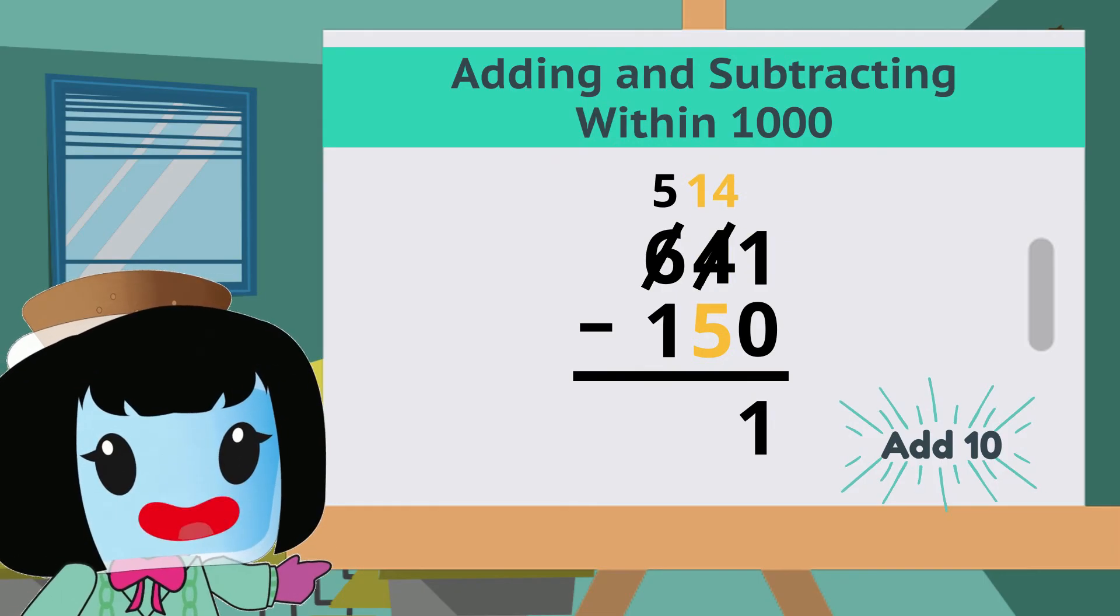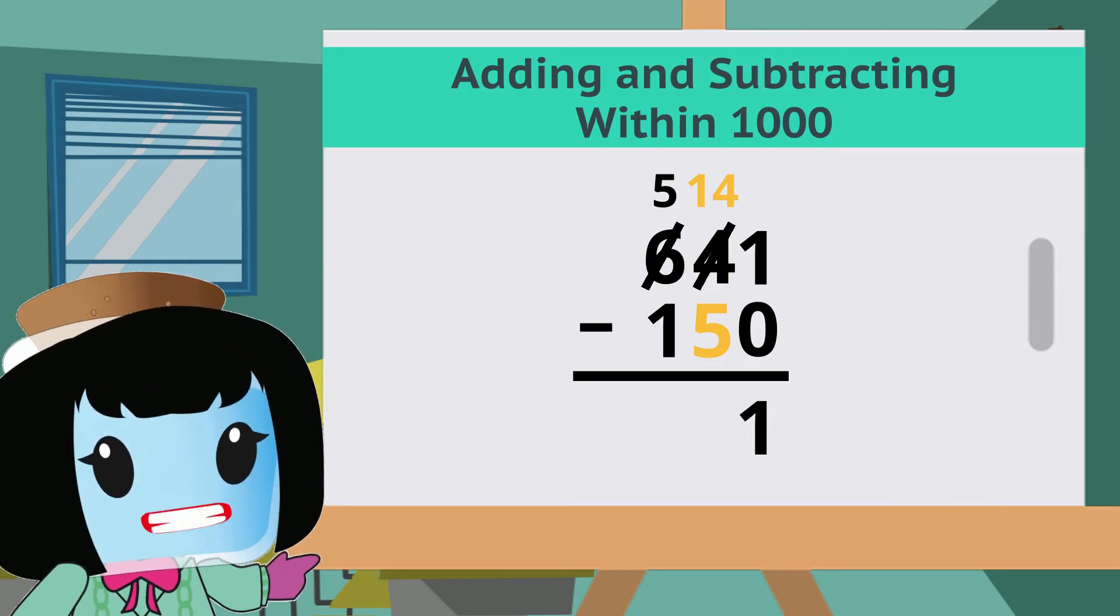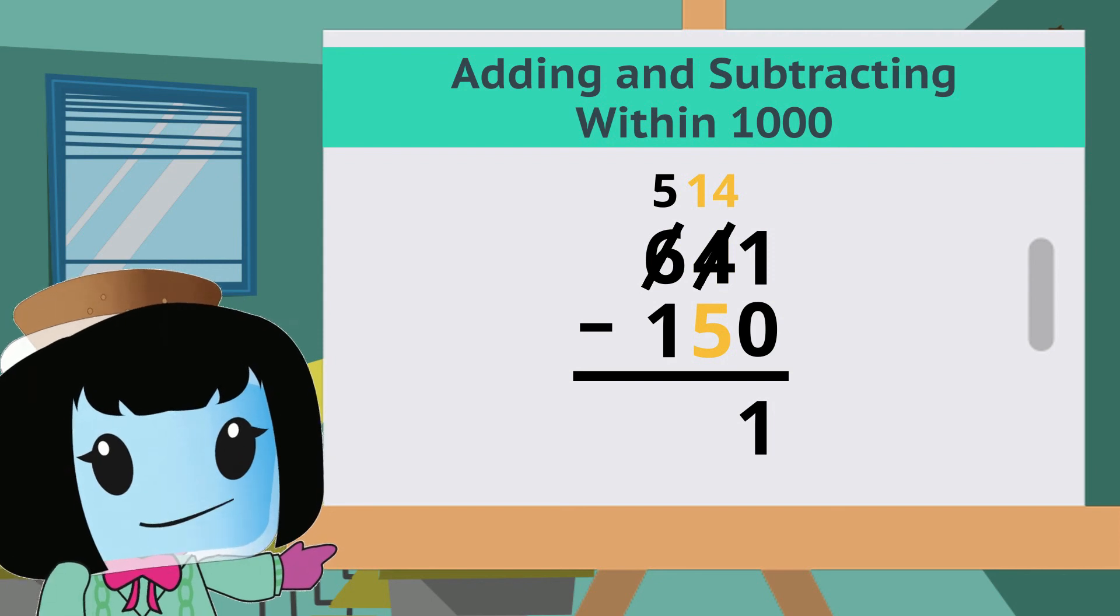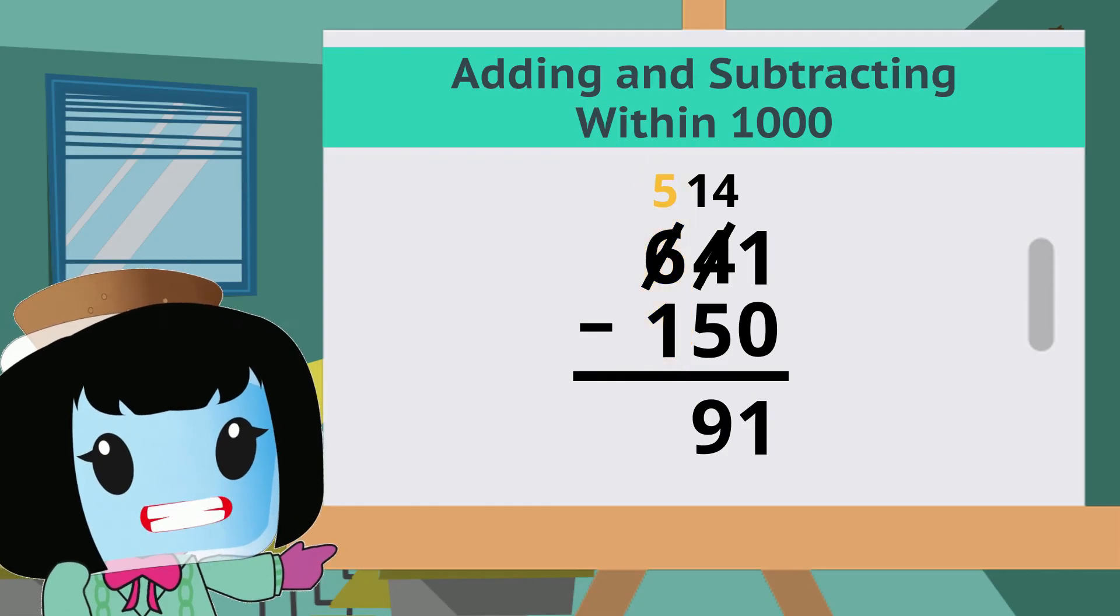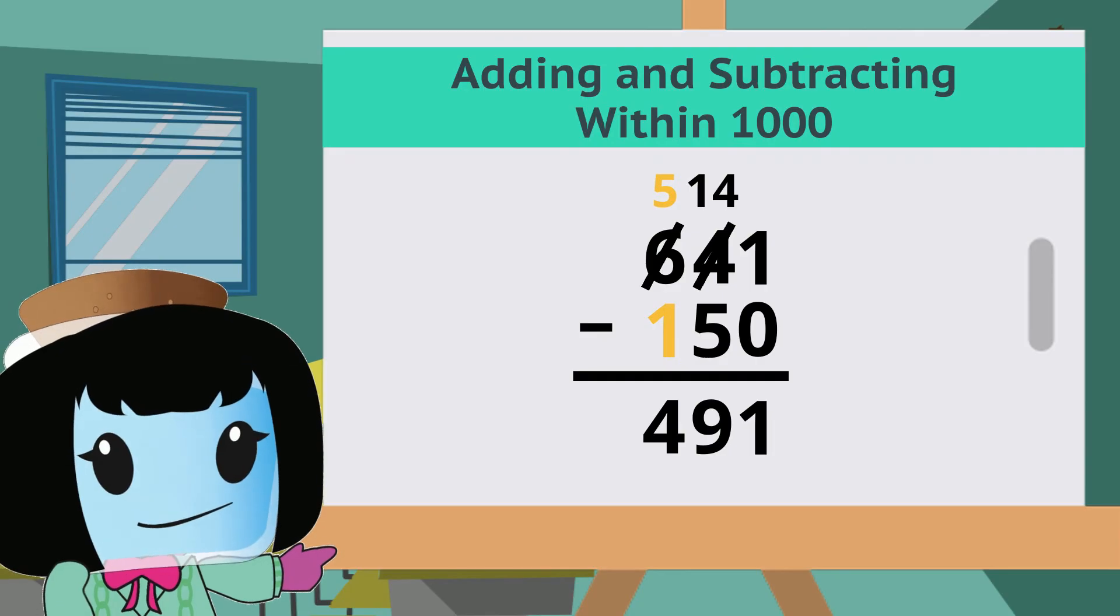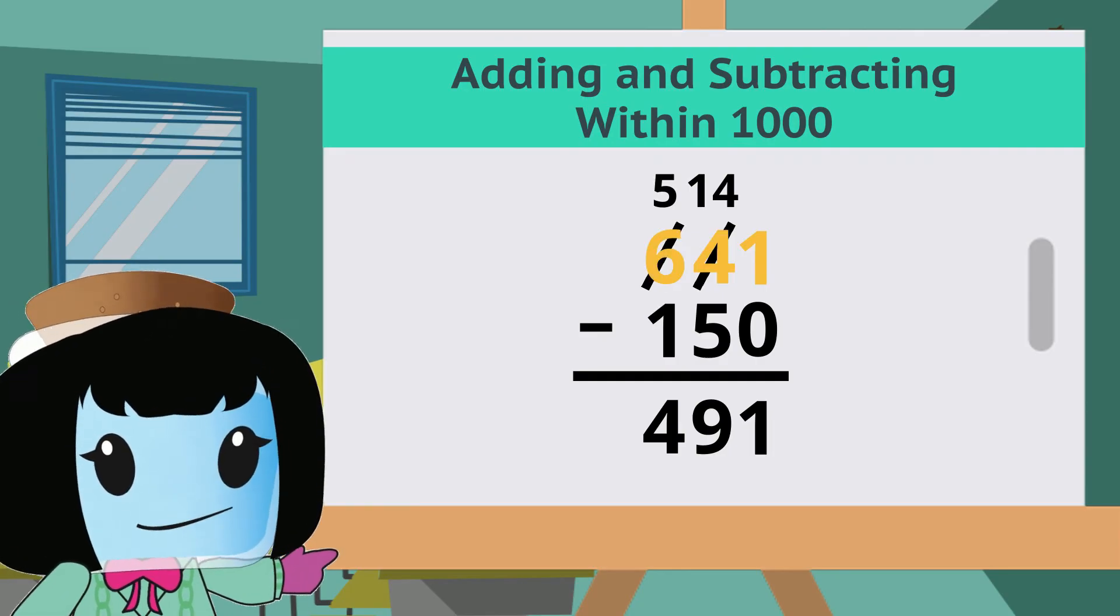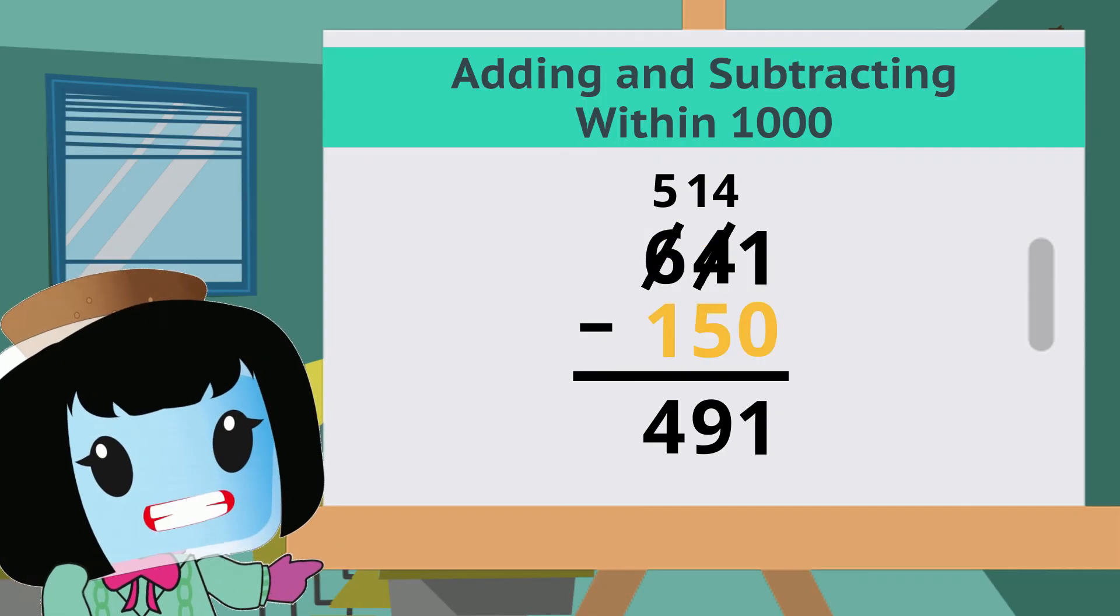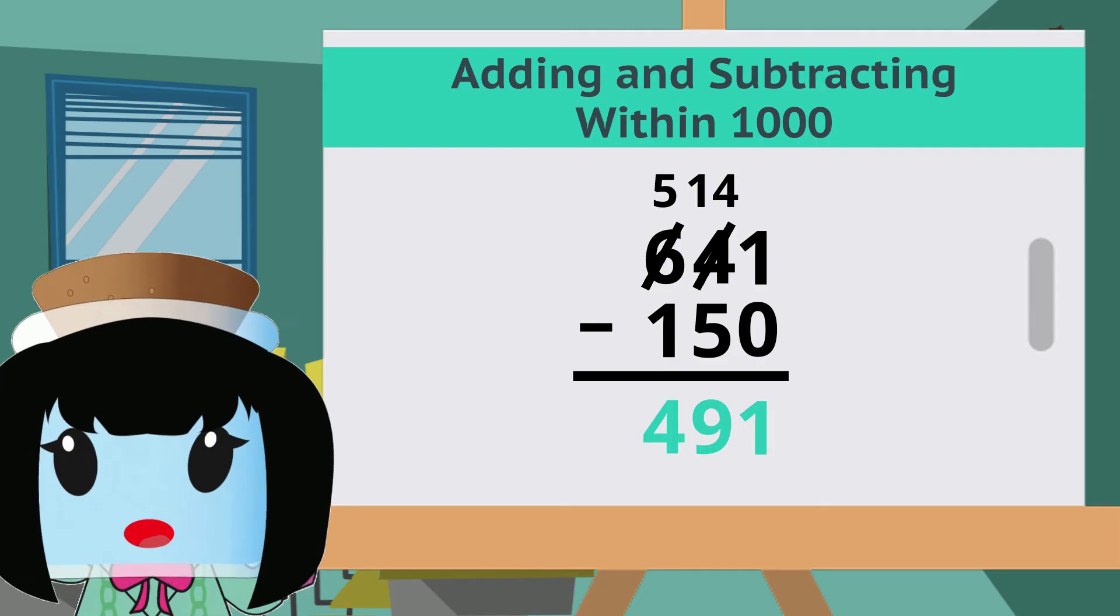Now we can continue subtracting. 14 minus 5 equals 9. And for the hundreds column, 5 minus 1 equals 4. This means that 641 minus 150 equals 491.